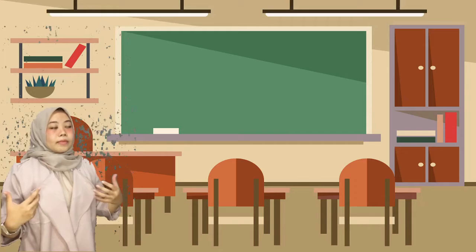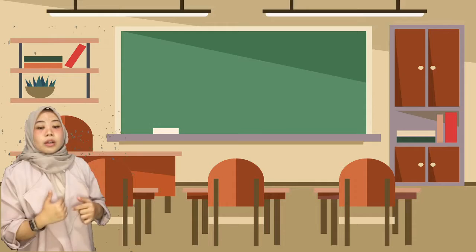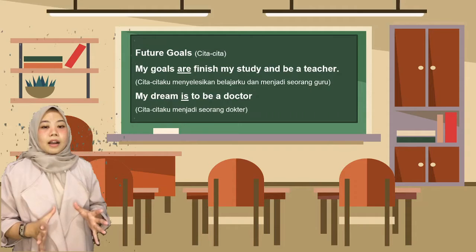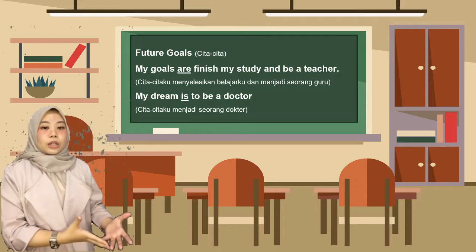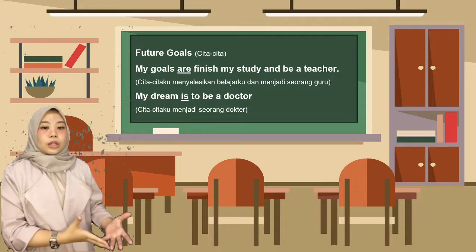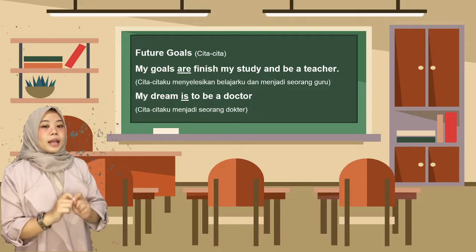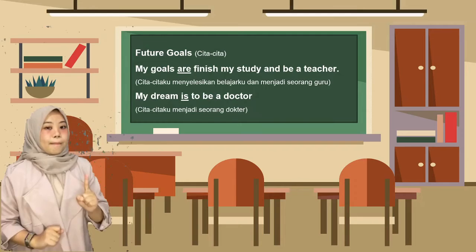Next, about your future goal — atau cita-cita. You can say 'My future goals are finish my study and be a teacher,' or 'My dream is to be a doctor.' Perbedaannya adalah jumlah cita-cita yang ingin kalian sebutkan. Jika dua cita-cita, gunakan 'are': 'My goals are finish my study and to be a teacher.' Jika hanya satu, gunakan 'My dream is be a doctor.' Are digunakan untuk lebih dari satu cita-cita, dan is digunakan untuk satu cita-cita.